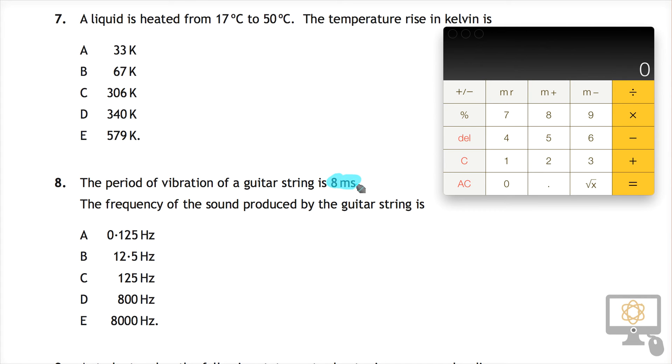So I'll just highlight this. This is our period, so that's got the symbol T. The frequency of the sound produced by the guitar is one of these values. We need to know the relationship between period and frequency, f is equal to 1 over T.